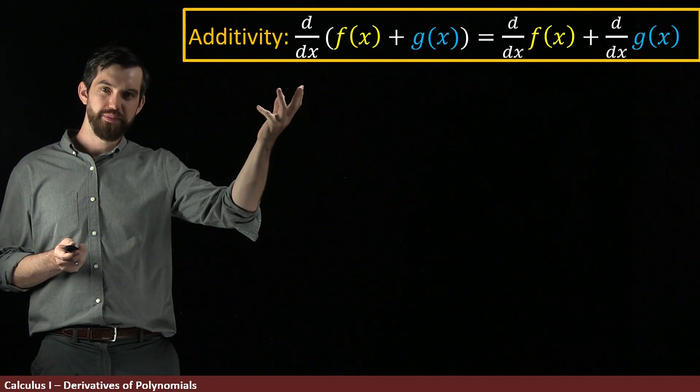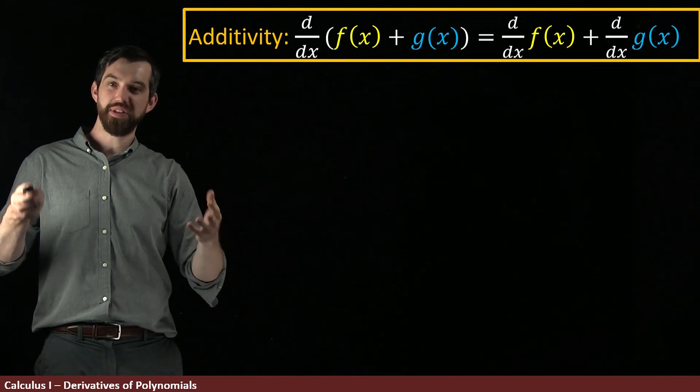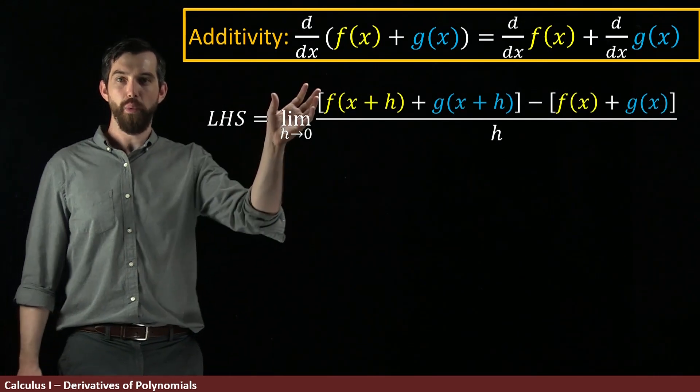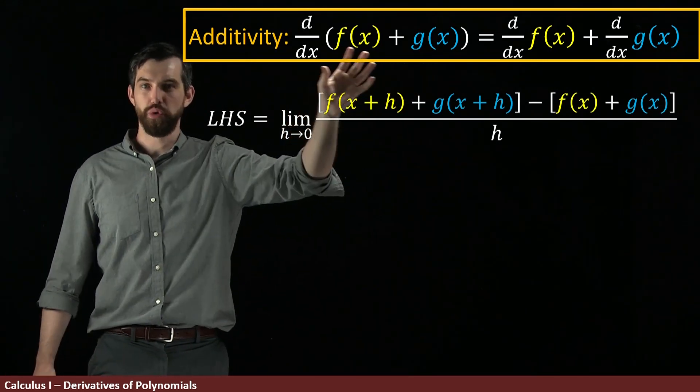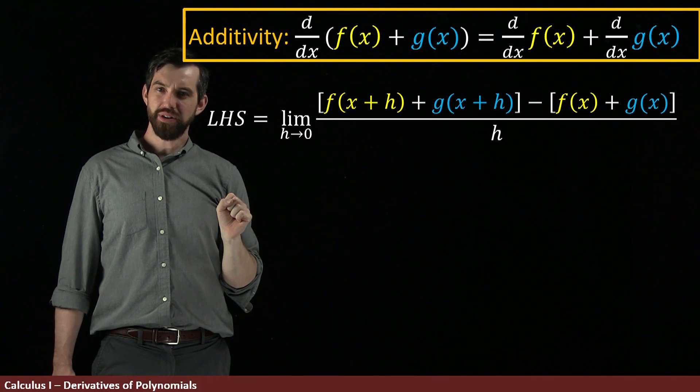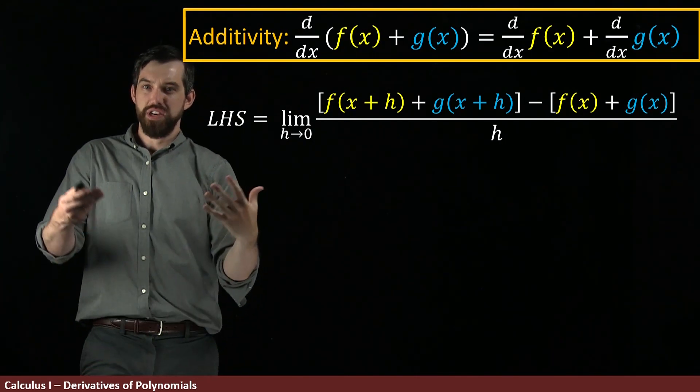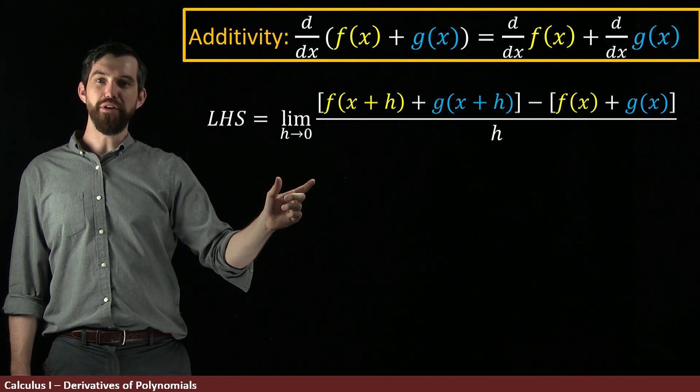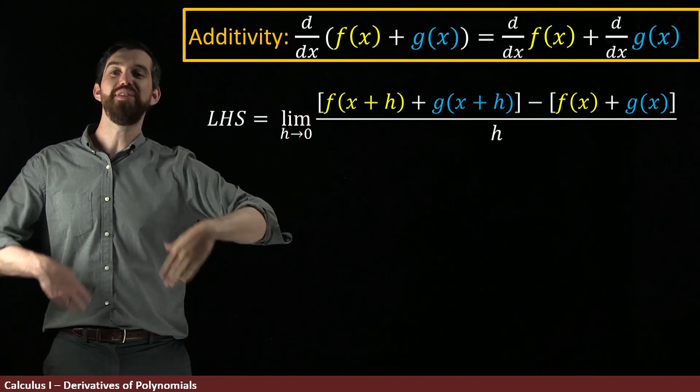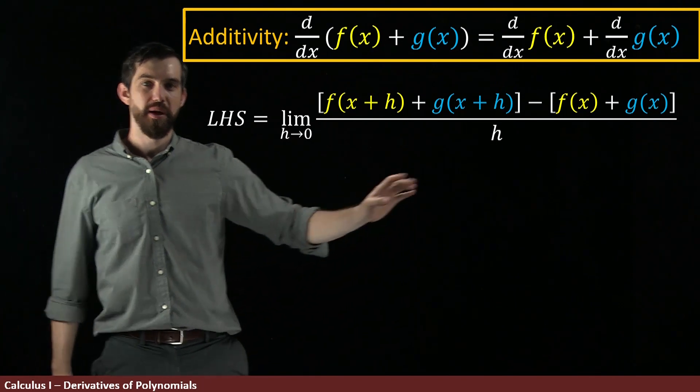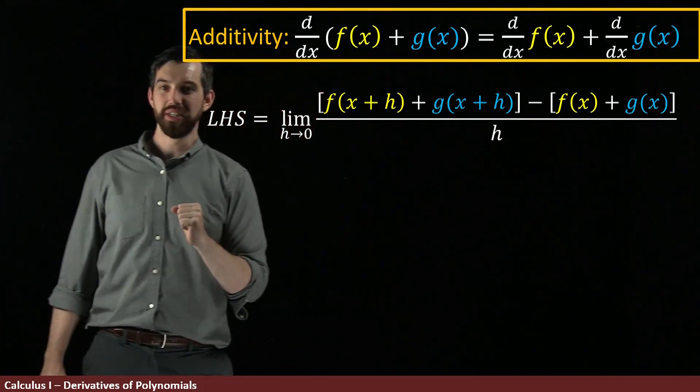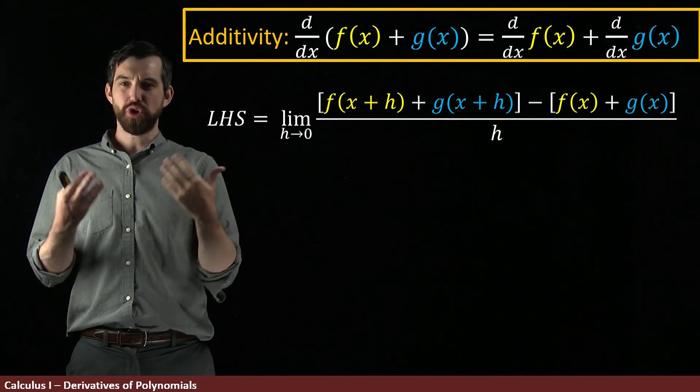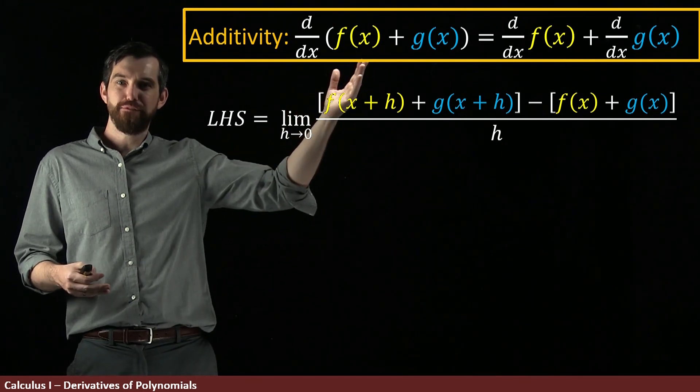So, we want to prove this, and we're going to prove this by the definition of the derivative. So, I'm going to begin with the left-hand side here. What I'm claiming, I'm dealing with the derivative of the sum. And what I'm doing is the definition of the derivative. So, the definition is the limit as h goes to zero of whatever I have at x plus h minus whatever I have at x all divided out by h.